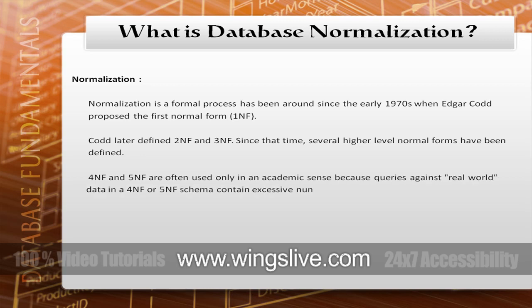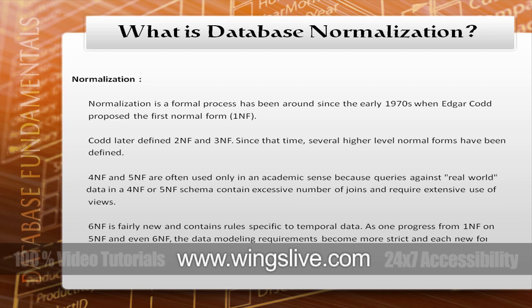4NF and 5NF are often used only in the academic sense, because queries against real-world data in a 4NF or 5NF schema contain excessive numbers of joins and require extensive use of views. 6NF is fairly new and contains rules specific to temporal data. As normalization progresses from 1NF to 5NF or even 6NF, the data modeling requirements become more strict, and each new form provides a lower degree of duplication than the preceding form.